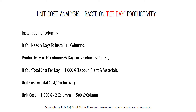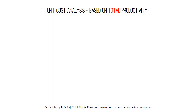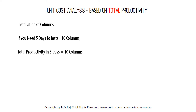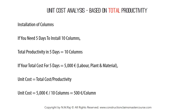Now let's carry out a separate unit cost analysis based on total productivity. Once again, we have 10 columns to install in 5 days. Total productivity in 5 days is equal to 10 columns. If your total cost for 5 days is equal to 5,000 euros, your unit cost is equal to 5,000 euros divided by 10 columns, giving us 500 euros per column. The answer is exactly the same. We will apply these principles while carrying out our unit rate analysis.